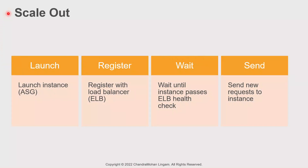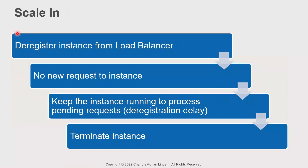Let's take the previous scenario where we have a load balancer with a bunch of servers to process requests. During a scale-out event, when autoscaling launches a new server, it registers the instance with a load balancer. Once the instance passes the load balancer health check, it will start receiving requests. Similarly, when autoscaling needs to remove a server due to a scale-down action, it must first deregister the instance from the load balancer. When the instance deregisters, no new requests are sent to it, but the server is allowed to complete all pending requests. This can be controlled using the deregistration delay parameter. After the deregistration delay is completed, the instance is terminated by autoscaling.